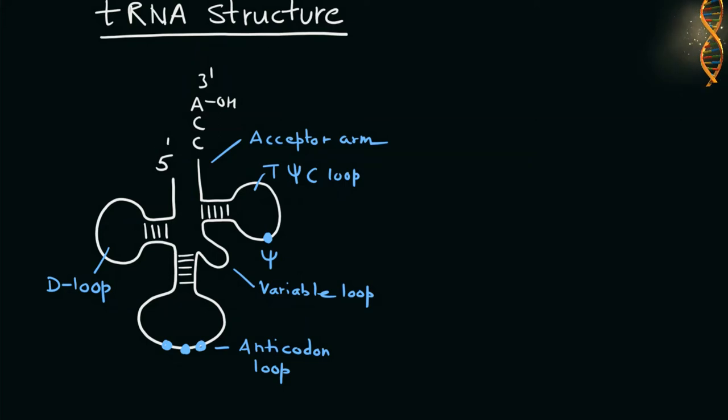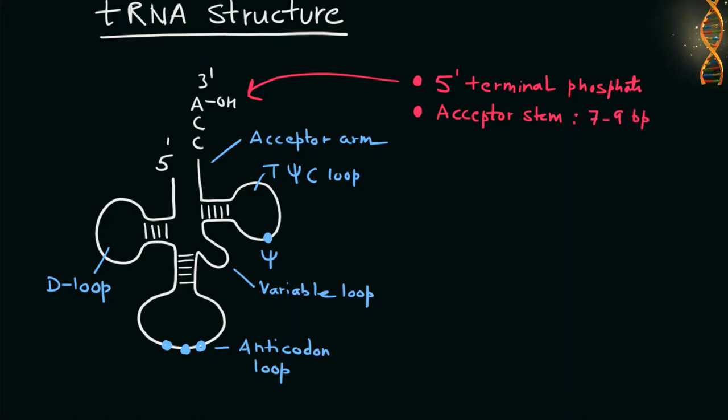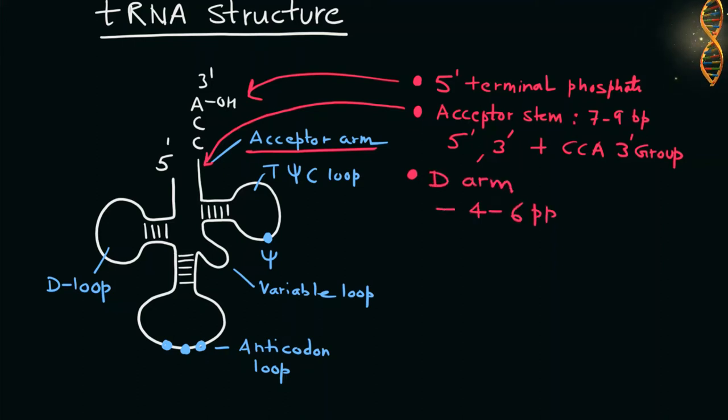The tRNA molecule has a 5' terminal phosphate group. The acceptor stem of tRNA is a 7 to 9 base pair stem made by the base pairing of 5' terminal nucleotide with the 3' terminal nucleotide, which contains CCA 3' terminal group used to attach the amino acids. Next is the D-arm.